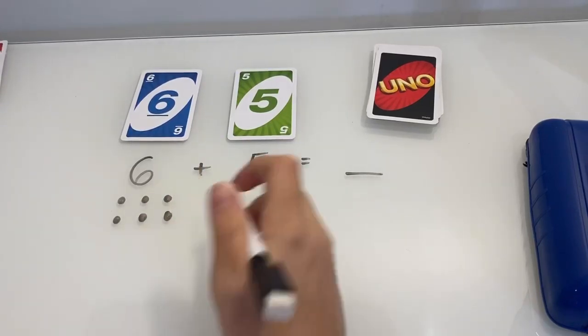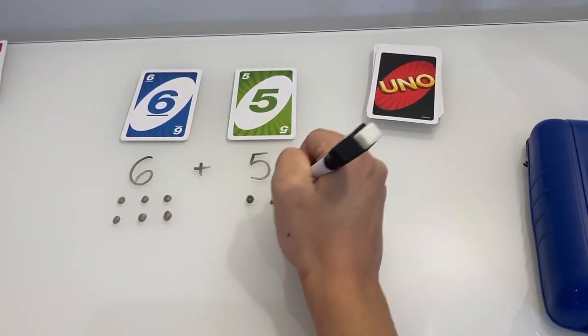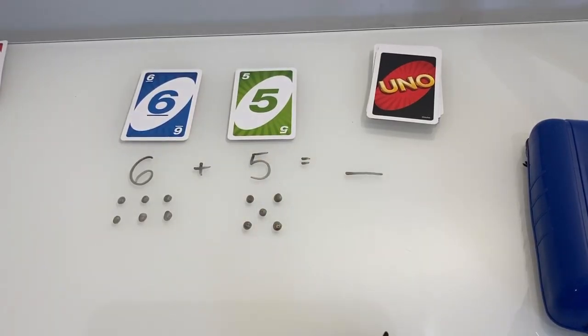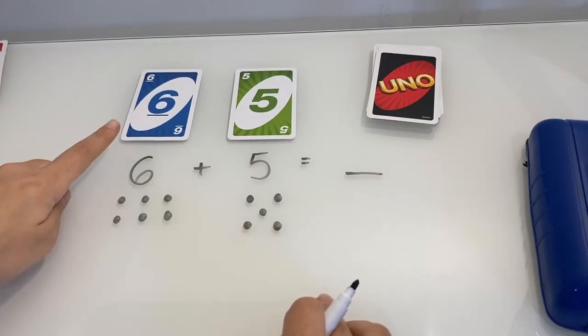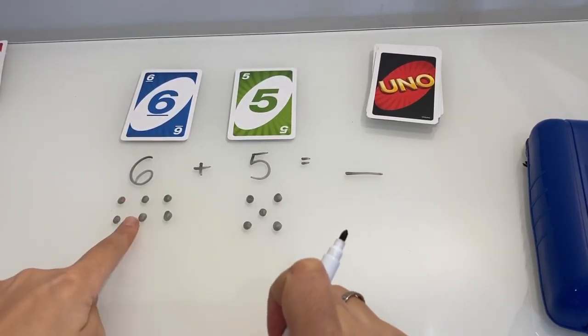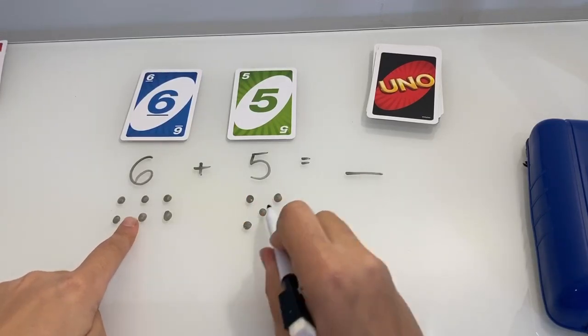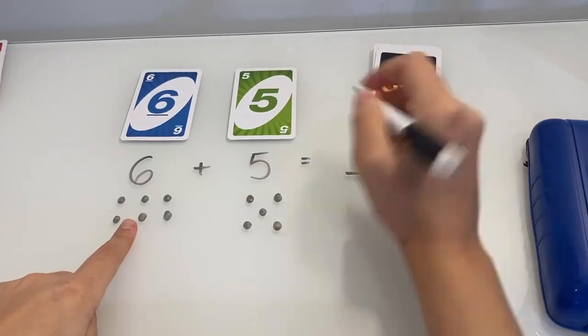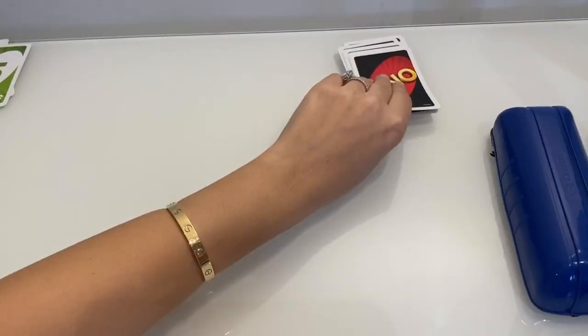Six plus five: one, two, three, four, five. So out of six or five, which is the biggest number? That's right, six. So lock in six and count five more: six, seven, eight, nine, ten, eleven. Beautiful.